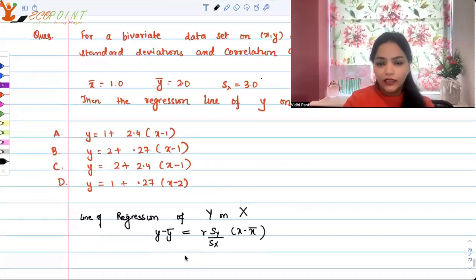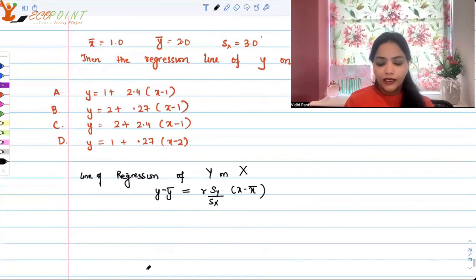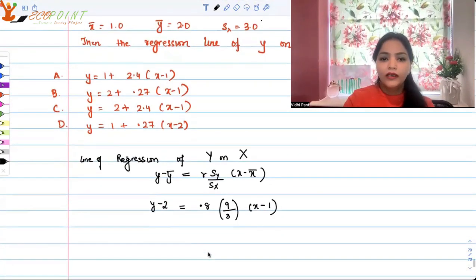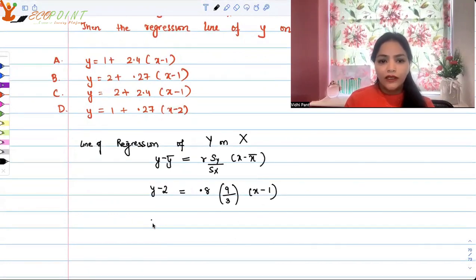Now we have the data. We have y bar, so y minus 2 equals r which is 0.8, s_y is 9 and s_x is 3, x minus x bar is 1. So which means what do we get? We get y minus 2 equals 0.8 times 3, which is x minus 1.